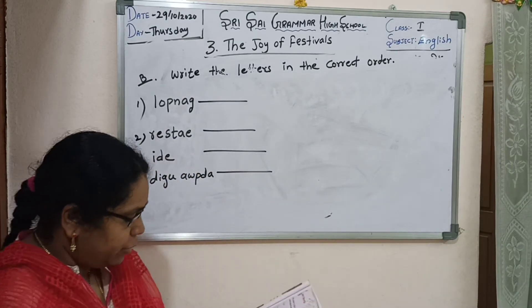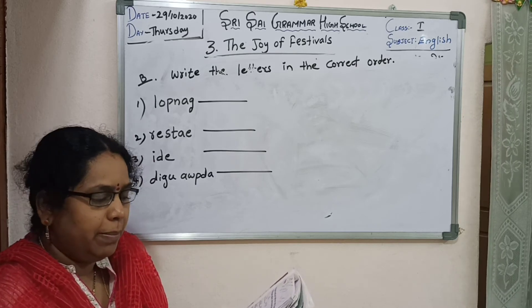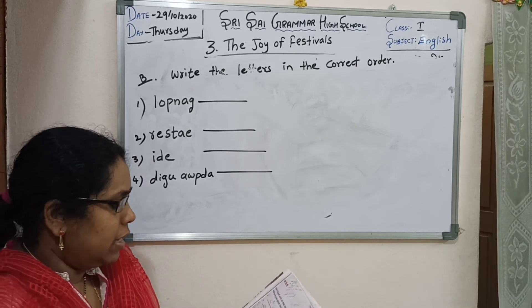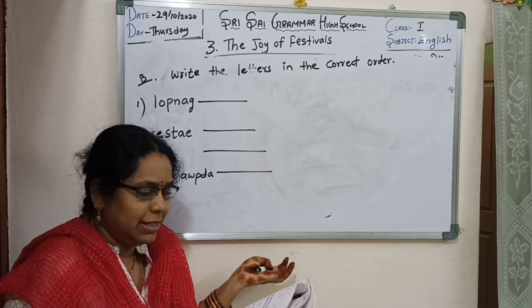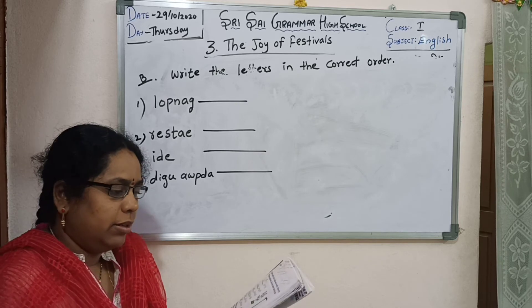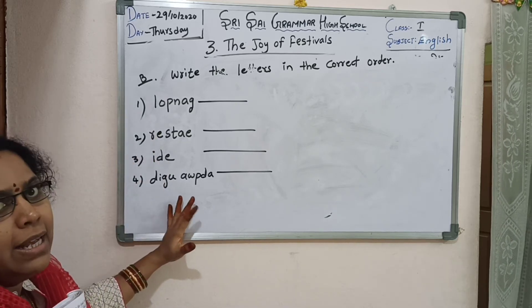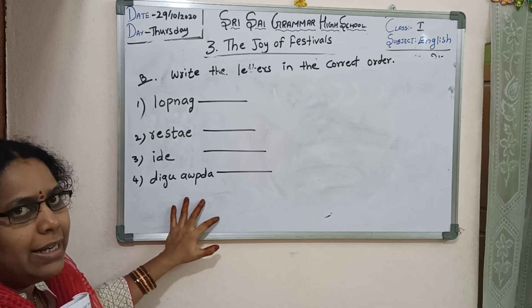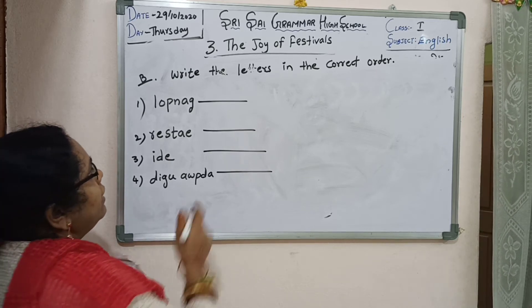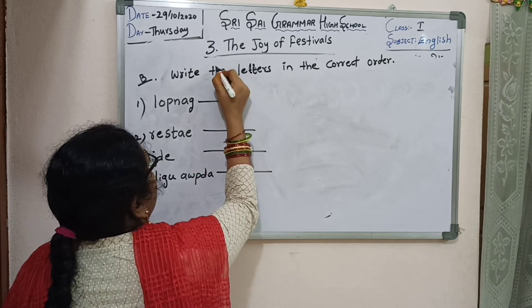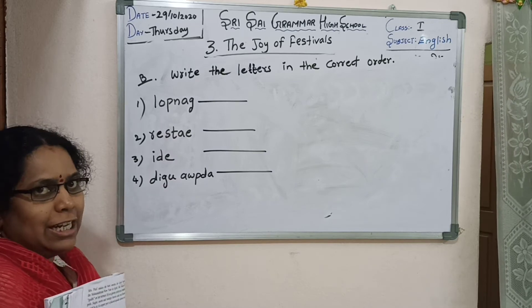Next, page number 25 again, part B. The names of some festivals have been given below, but the letters are all jumbled up. With the help of the story you have read, put the letters in the correct order to name the festivals. Look carefully two or three times — you'll get the idea.